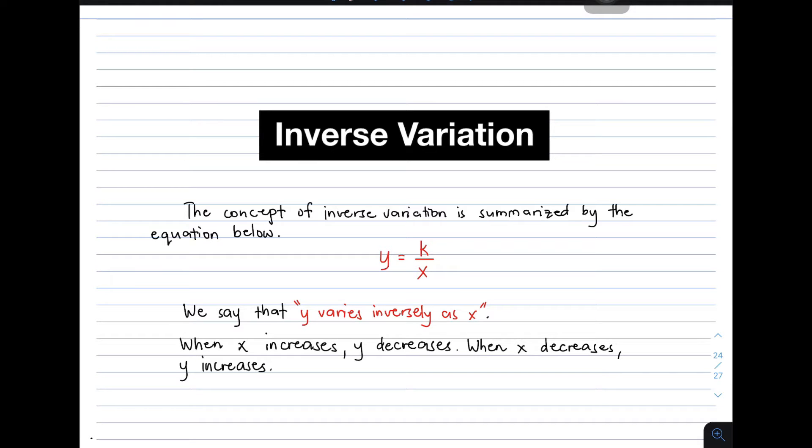The concept of inverse variation is summarized by the equation below. We have here y is equal to k over x. So y is equal to k over x is simply the direct translation of this phrase: y varies inversely as x. You need to memorize two things about inverse variation. First, its general equation y is equal to k over x. And then the phrase, which is y varies inversely as x.